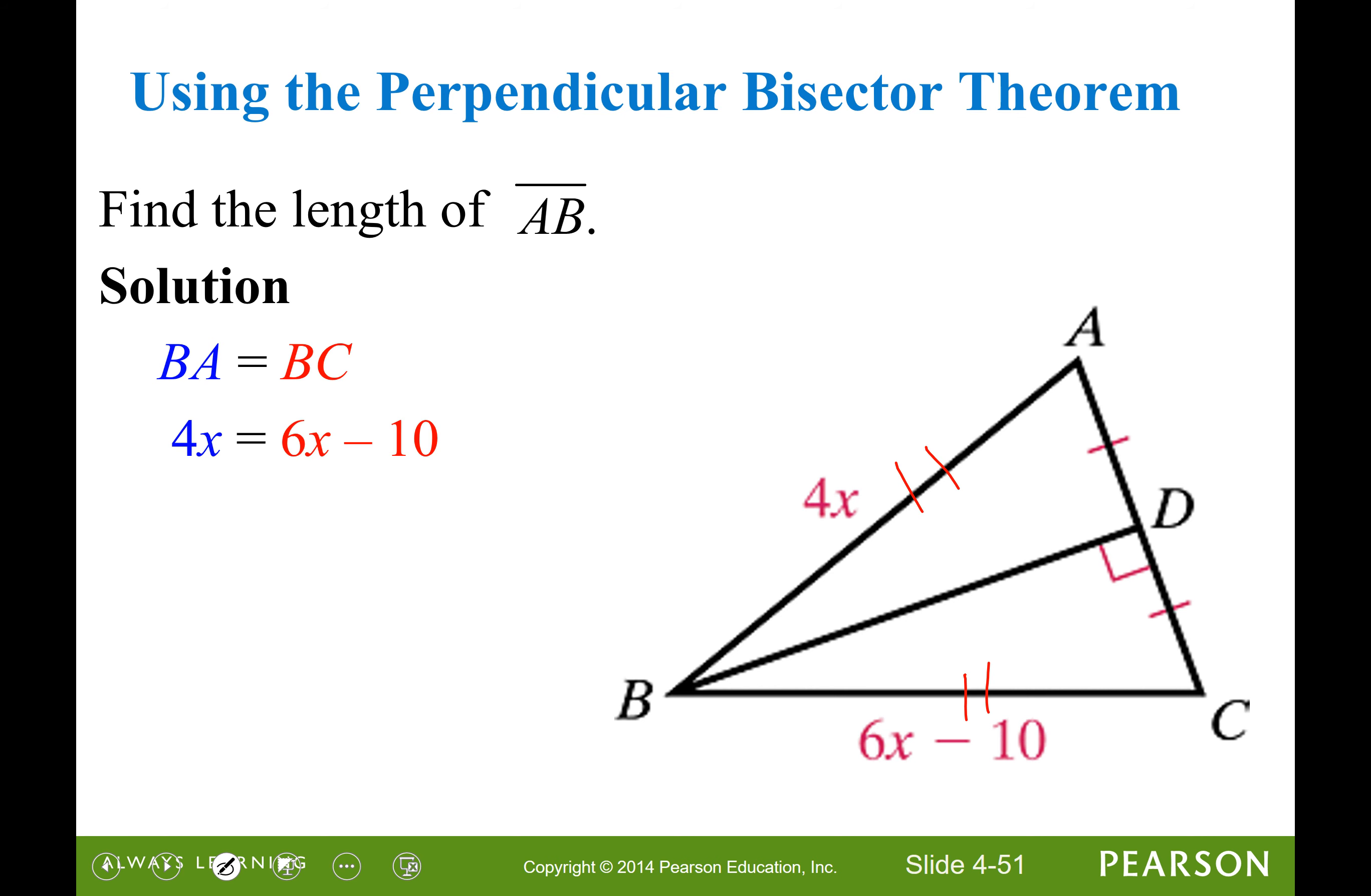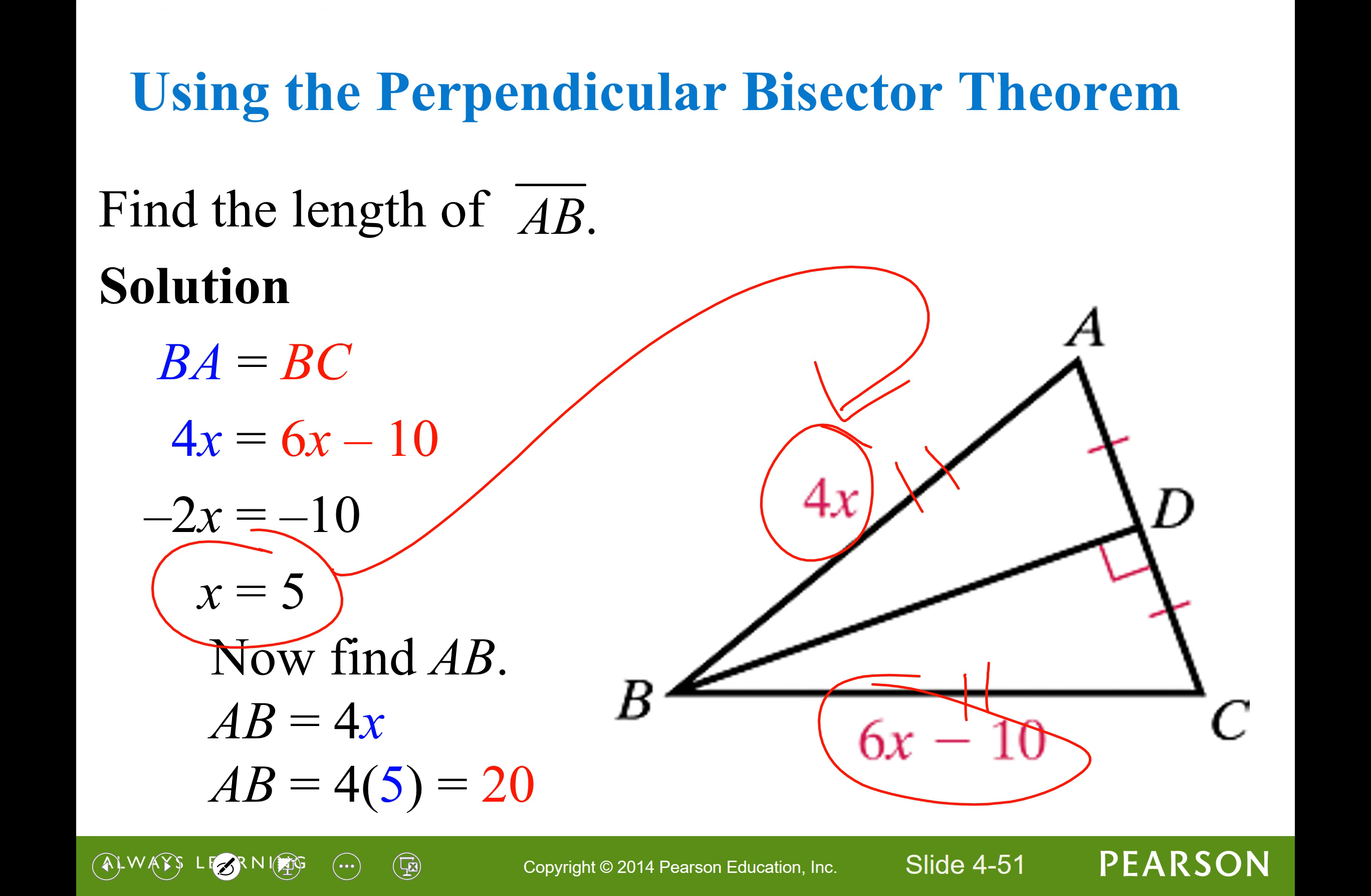We can then set those algebraic expressions equal to each other because we know that the segments are congruent and have equal measure. We can then use the subtraction property of equality and then the division property of equality to solve for our variable. Then we can use that known variable and plug it back in to find that 4 times 5 will give us the measure of segment AB. That's in linear units.